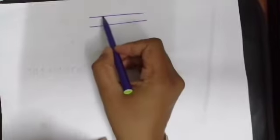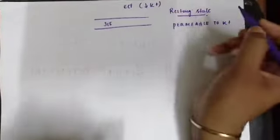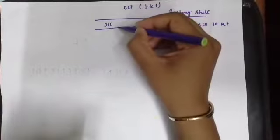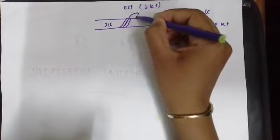This is a neuron and this is a cell membrane. In the resting state, the membrane is permeable to potassium ions only. The extracellular fluid has a lower concentration of potassium compared to the intracellular fluid, where there is more potassium concentration. Because of this concentration difference, potassium ions will move from inside the cell to outside across the concentration gradient.